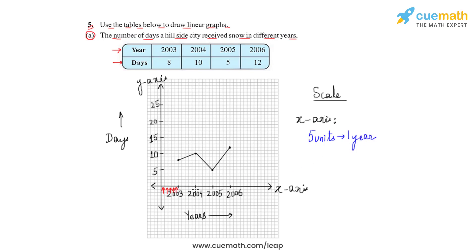Between each year you'll see five units. On the y-axis, if we observe these small boxes, we again see that five units on the y-axis represents five days. This is the scale taken into consideration while drawing this line graph. The first point represents the number of days in 2003, then 2004, 2005, and 2006 for which Hillside City received snow.